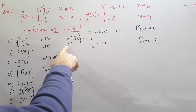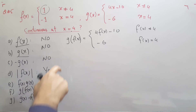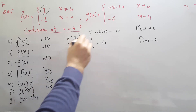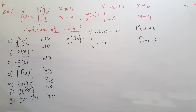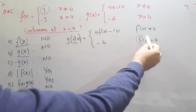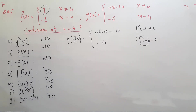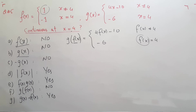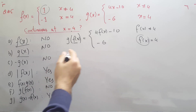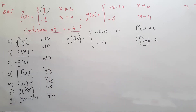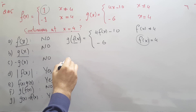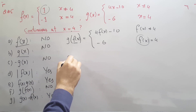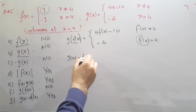For the composition g(f(x)), we replace x with f(x) to get the composed function. However, there is no value of f(x) that gives x = 4, so the function is not defined at x = 4, and therefore g(f(x)) is not continuous at x = 4.